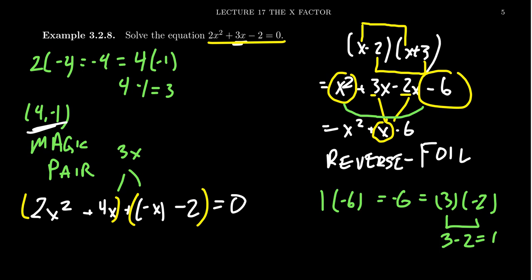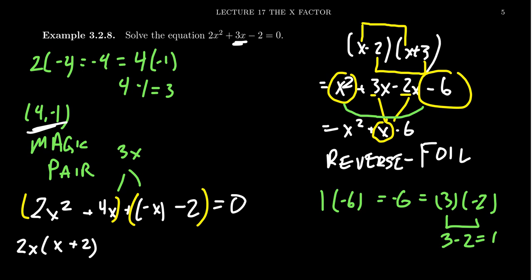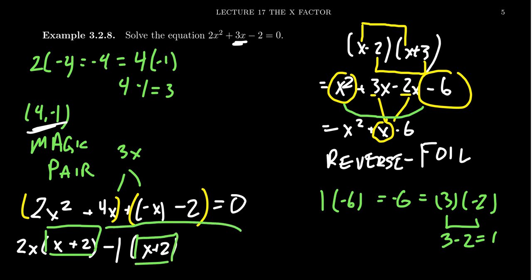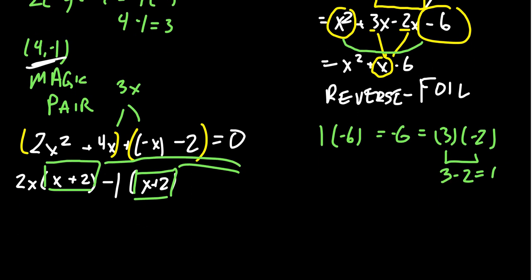We can't pull a GCD out of everything, but if you look at the groups — the first group, two x squared plus four x — you could factor out a two x, which leaves behind x plus two. And then looking at the second group, we could factor out a negative one, which is common to both of them. Take out the negative one, you're left with an x plus two. Notice what we have here is that what's left over is the x plus two and the x plus two. Even though it's a binomial, this is now a common factor, which we can then factor out, giving us two x minus one and x plus two.